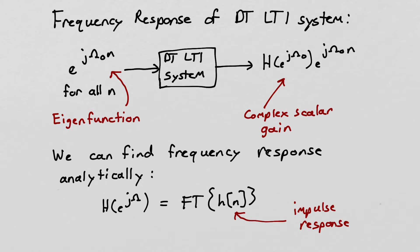And we can find that frequency response a couple different ways. One, we could just put in a bunch of complex exponentials and measure the gain that gets applied to each one of them. And then we could plot that gain for each of those exponentials as a function of the frequency of the exponential. But we can also find that frequency response analytically and you know how to do that. It's simply the Fourier transform of the impulse response of the discrete time LTI system.